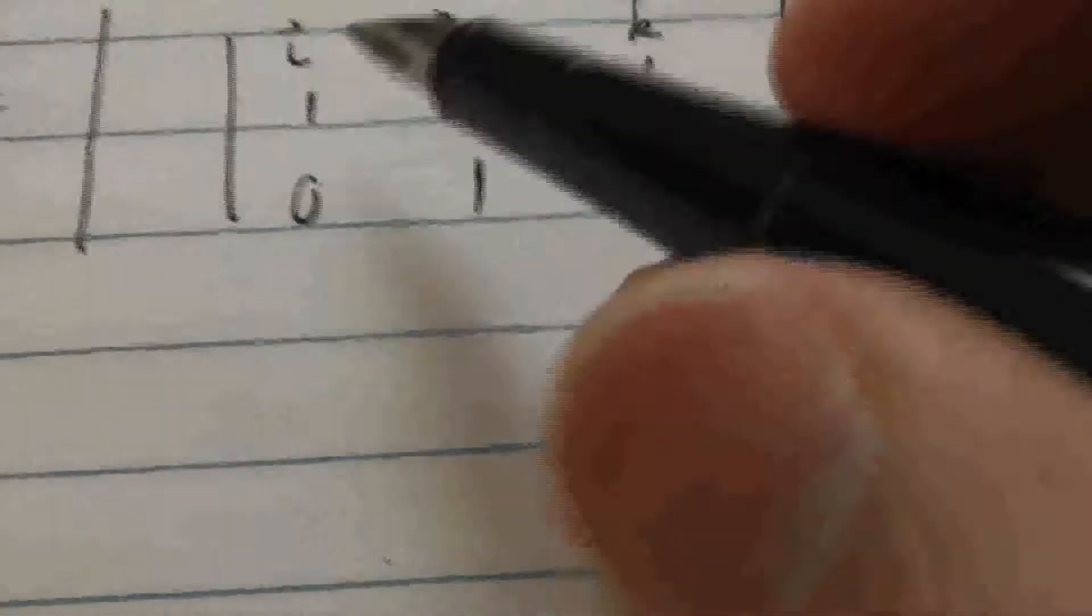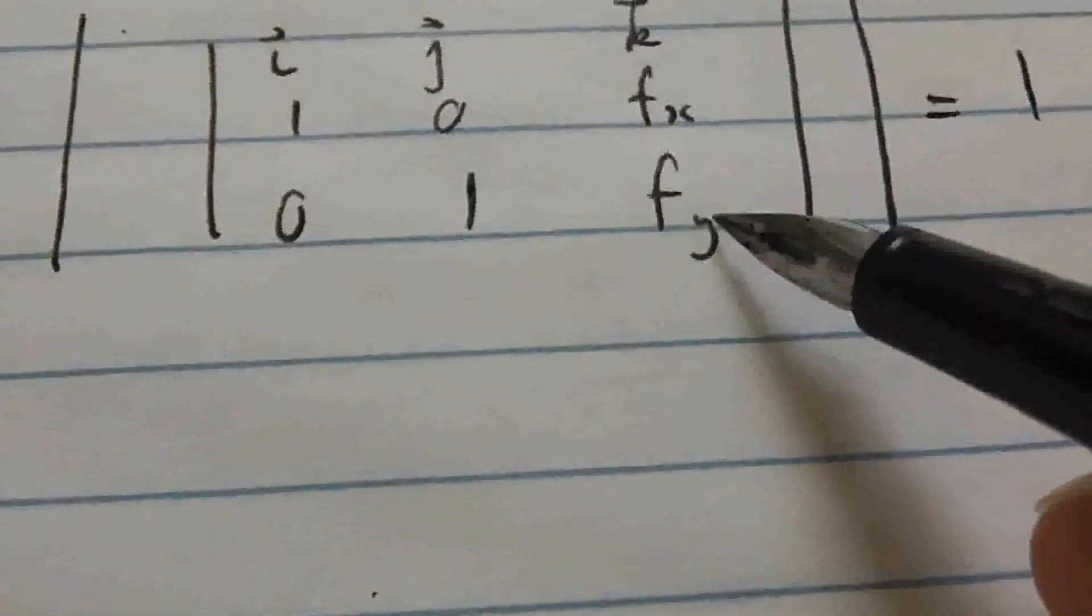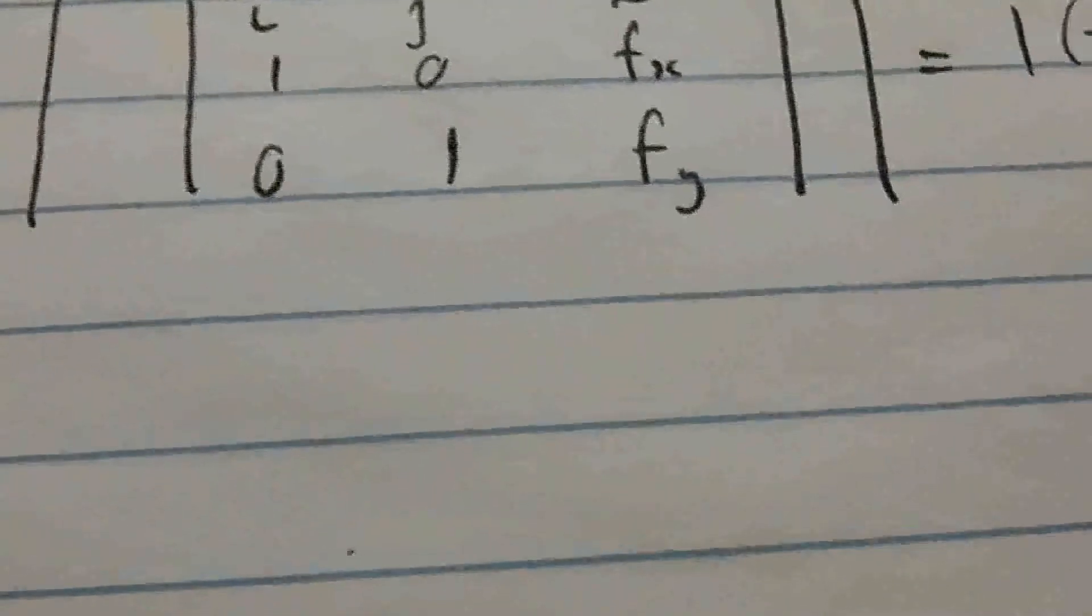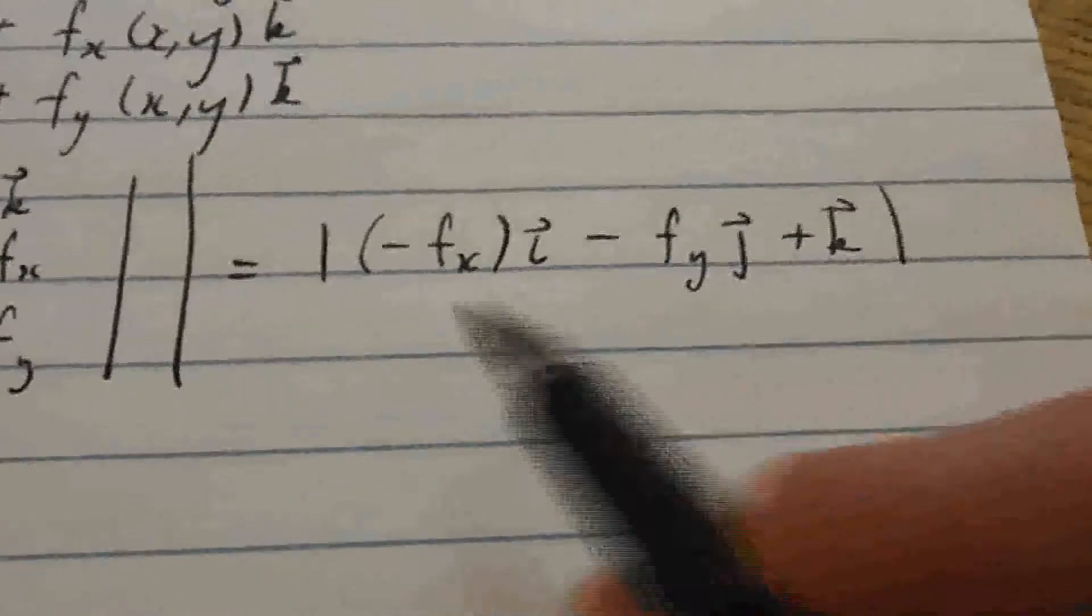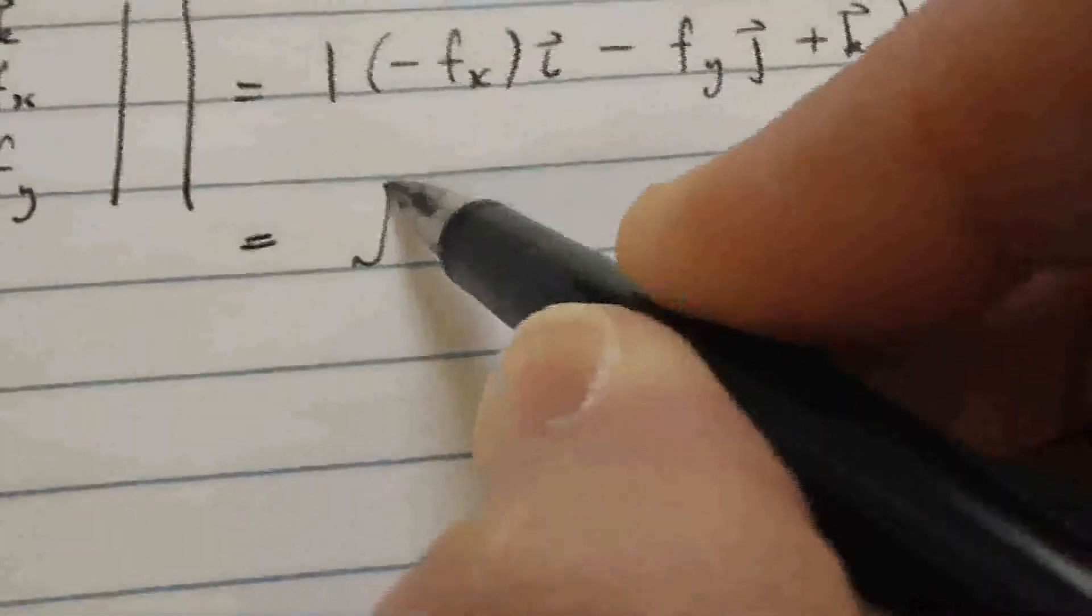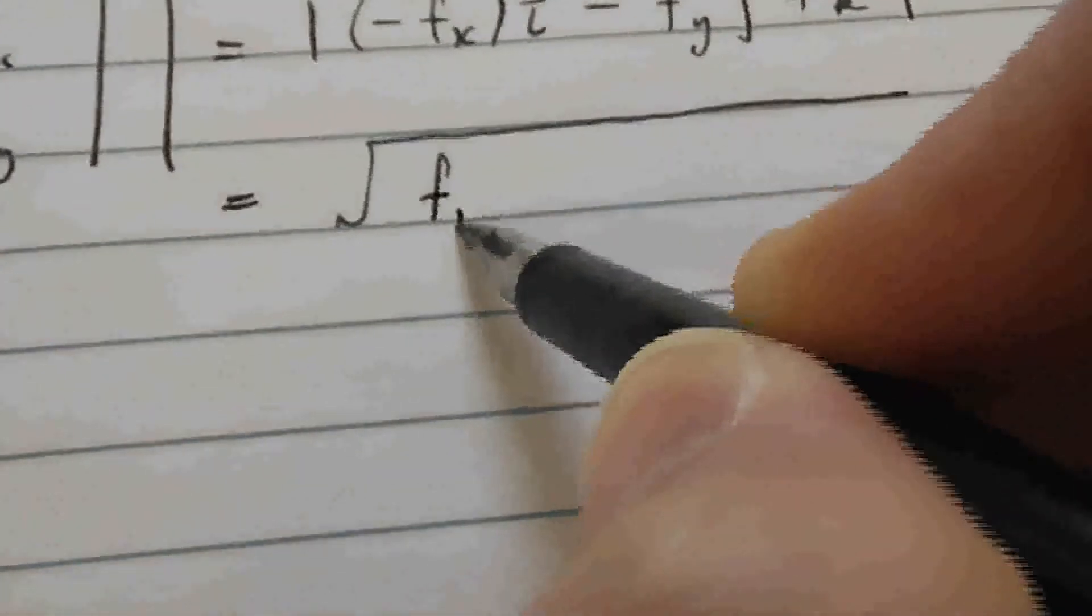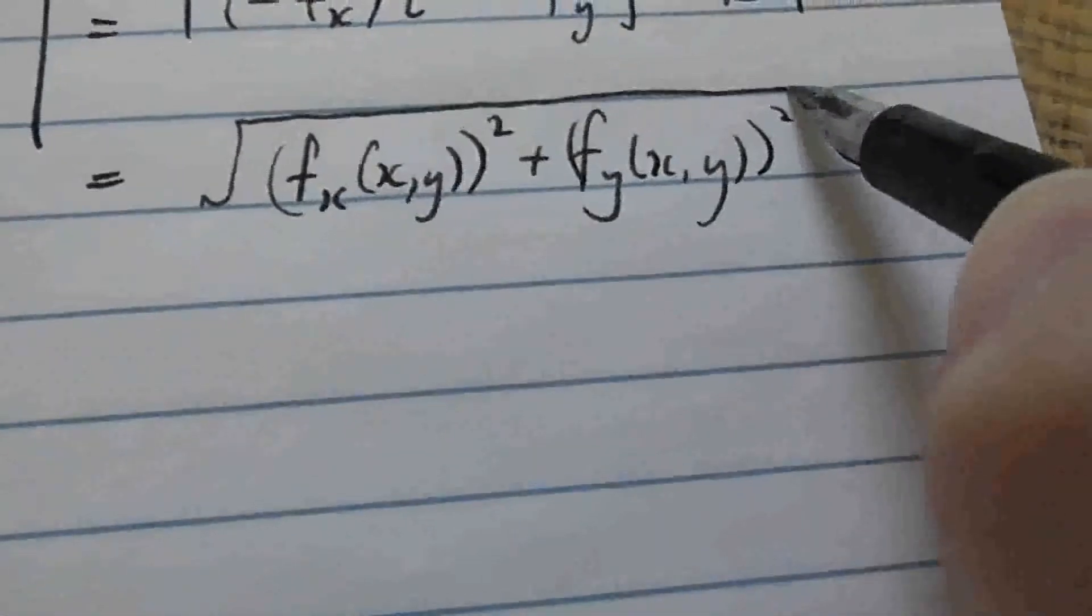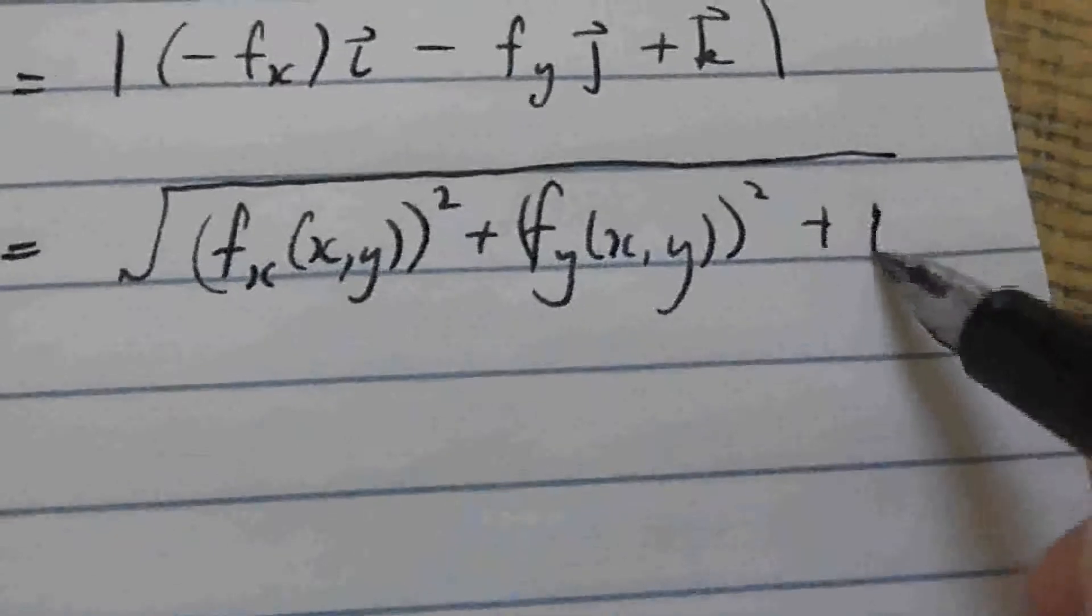So we're finding the magnitude of, well, in the i direction, we get zero times f y minus f sub x. And then in the j direction, minus f sub y minus zero. And then in the k direction, we have one. So that's the vector of what you want to find the magnitude. And the magnitude is the square root of the sum of the squares. So the x derivative squared plus the y derivative squared plus one. That's it.